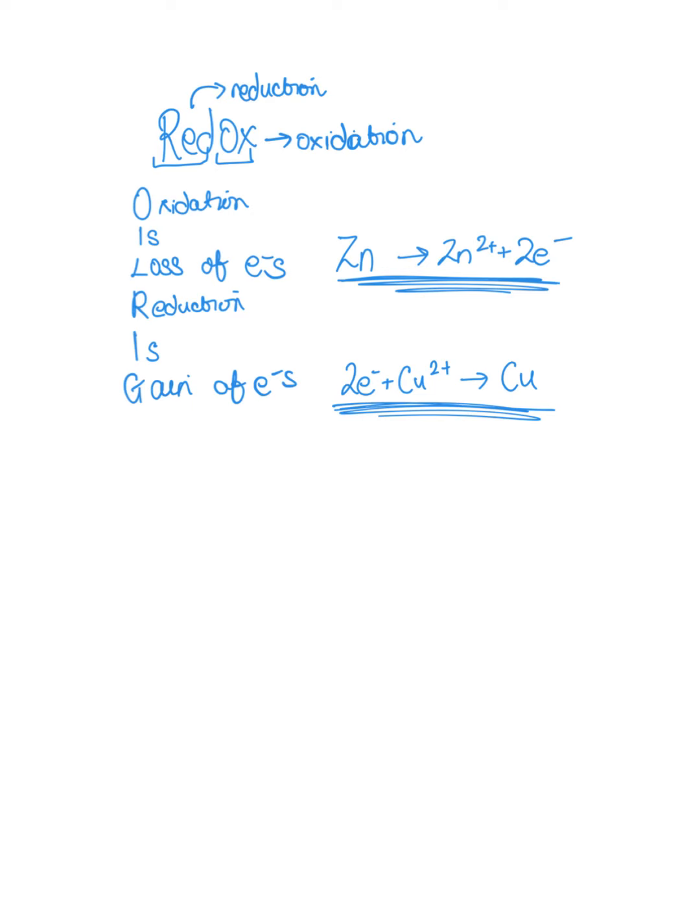All right. And the next thing we looked at is if this is the oxidation reaction, that means this reactant here is called the reductant, because once we have finished this reaction, we are causing the reduction reaction to occur. We're providing the two electrons needed for this reduction reaction to occur.